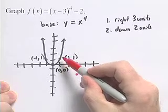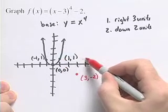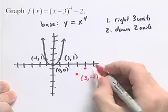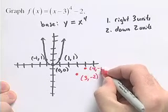Take the point 1 comma 1. We go right 3 units, 1, 2, 3, down 2 units, and we're at the point 4, negative 1.